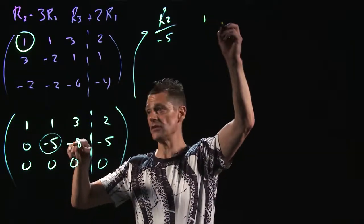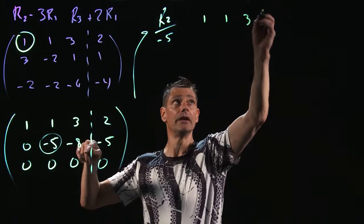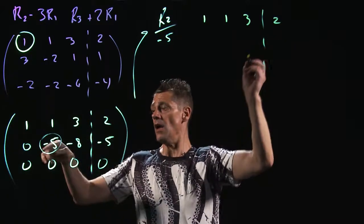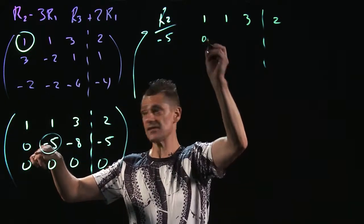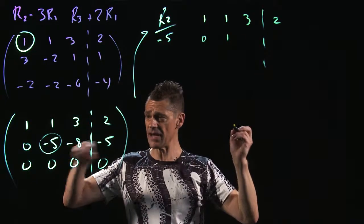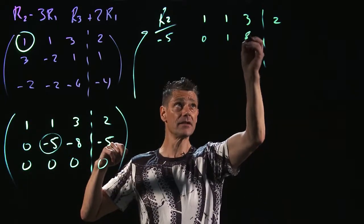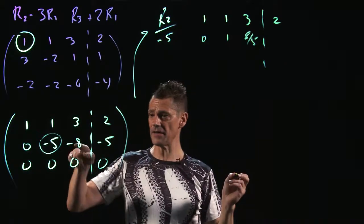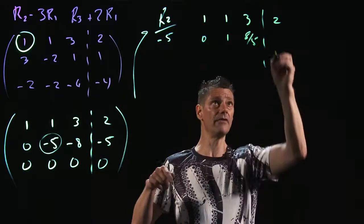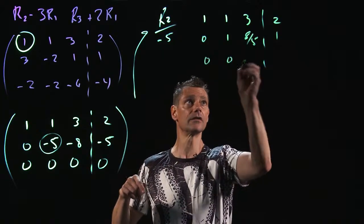OK. The first row we're not changing: 1, 1, 3, 2. 0 divided by -5 is 0. -5 divided by -5 is 1. -8 divided by -5 is positive 8 fifths. -5 divided by -5 is 1. And here we have 0, 0, 0, 0.